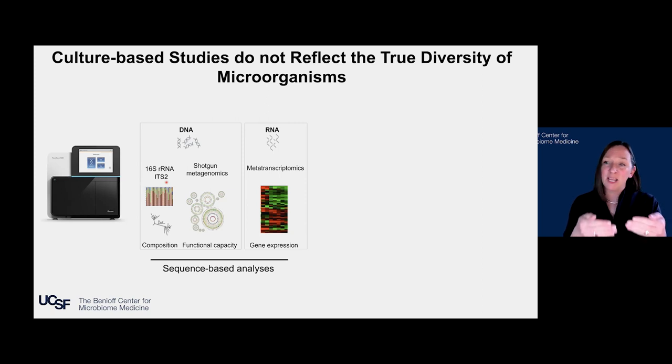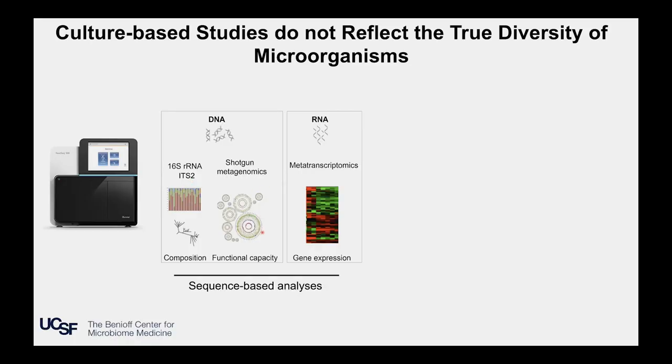The development of shotgun metagenomics allows us to understand what genes are encoded by each of those microbes in a given community. Each microbial species and even strain has its own genome encoding its own suite of genes. This approach takes the same DNA we extract from a sample, shreds it, sequences all of that DNA, and then we start putting the genomes of these organisms back together to understand what they encode in the pan-genome or multi-species members of a microbiome. This tells us the functional capacity of these microbiomes — what genes they encode and how they might differ across different groups such as patients versus healthy individuals.